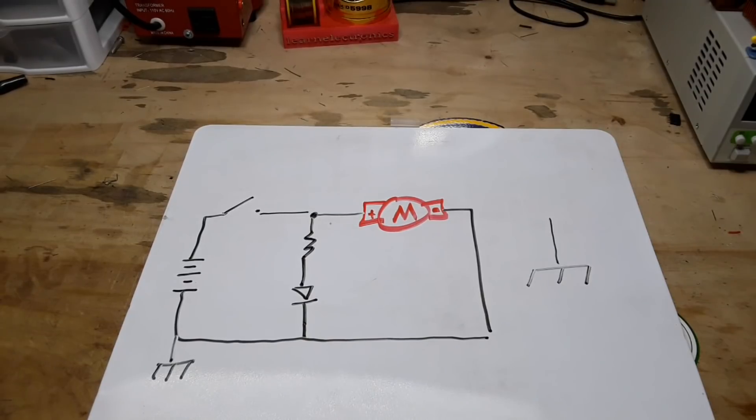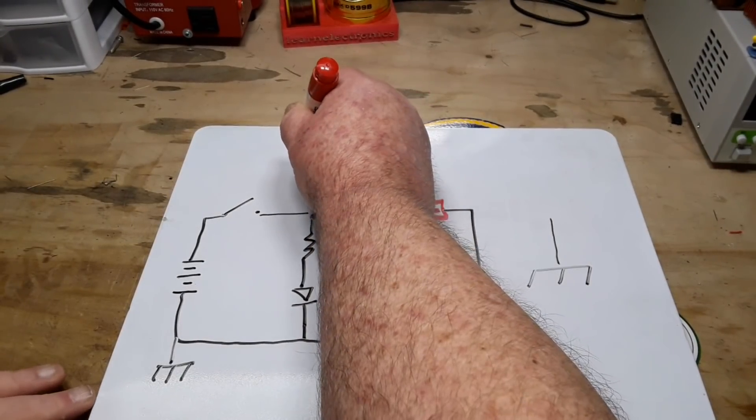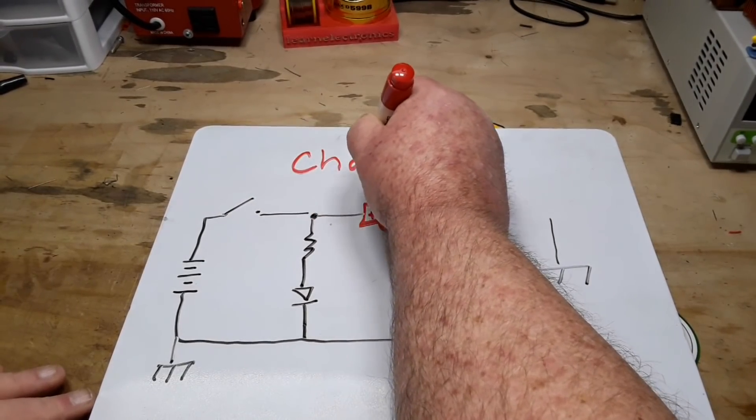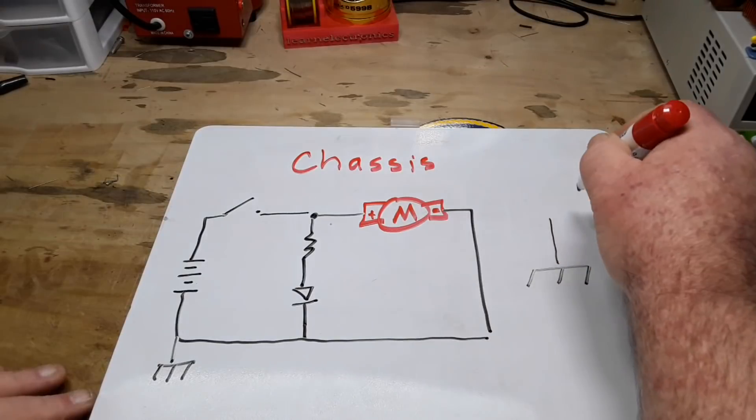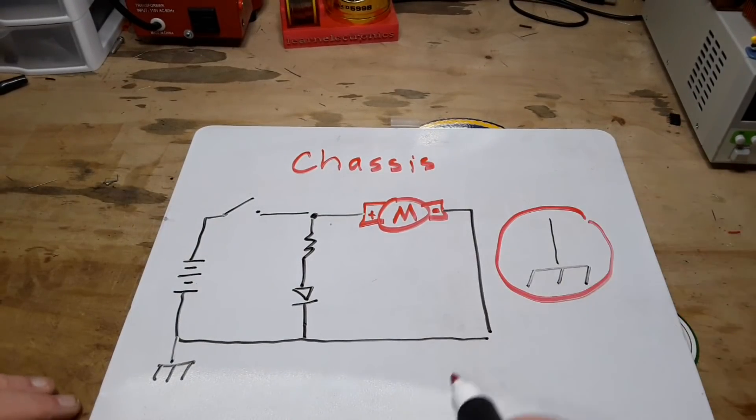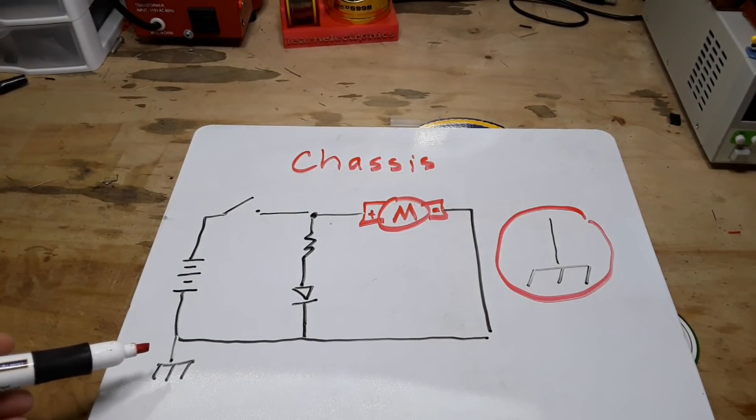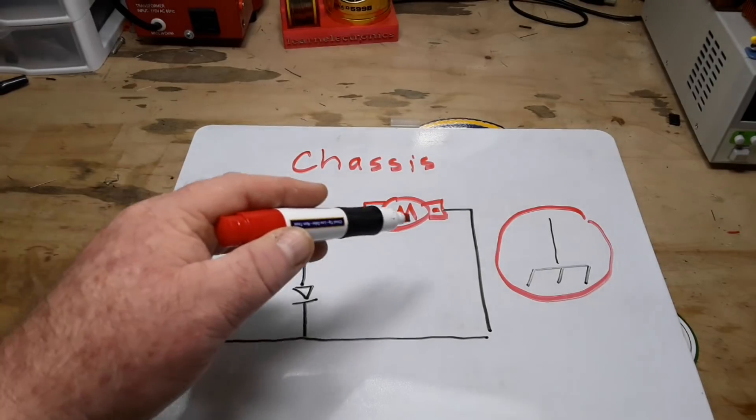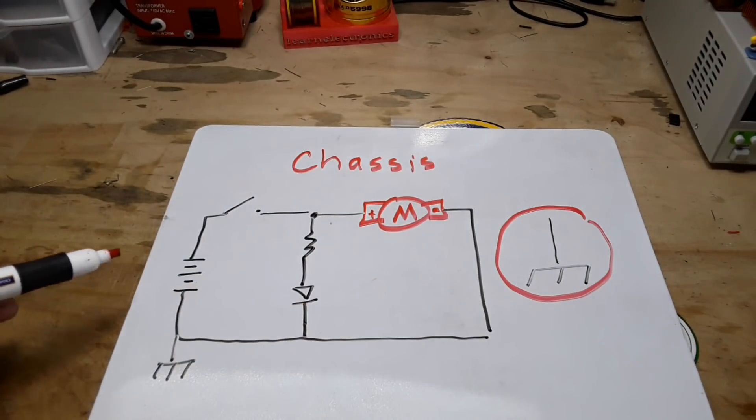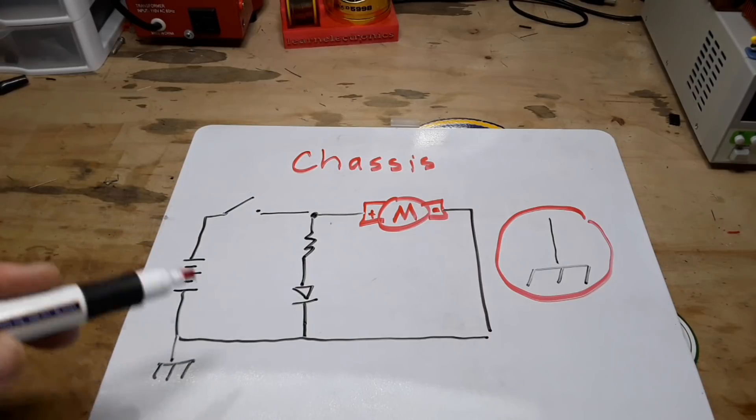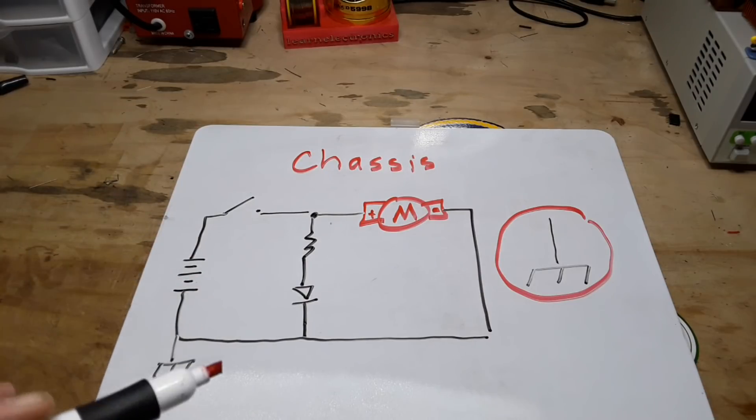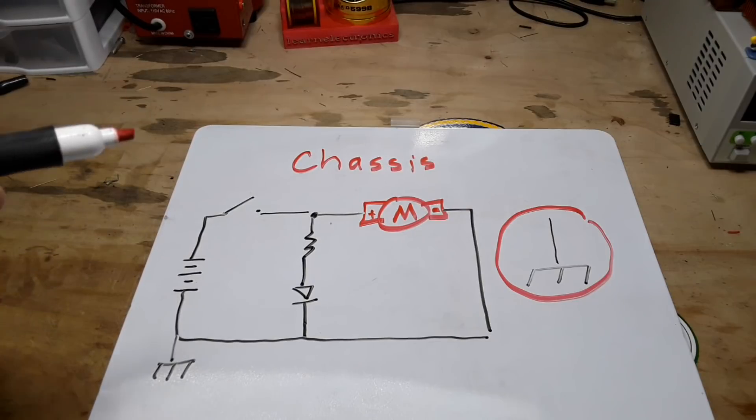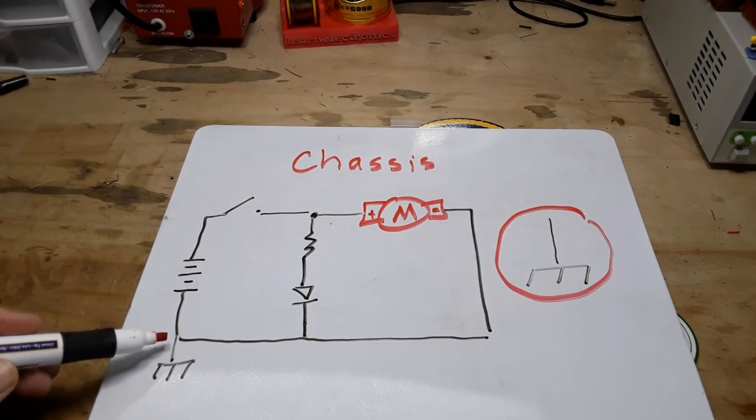Our next contestant today is the chassis ground. That is this symbol here. And you see it here in the schematic. The chassis ground is your common ground where all points of the circuit are connected to the chassis of the equipment or the PCB, whatever. They're all connected together. And the reason for that is so that we have that reference point for the potential.